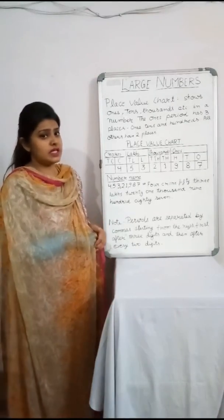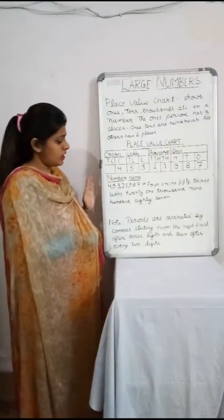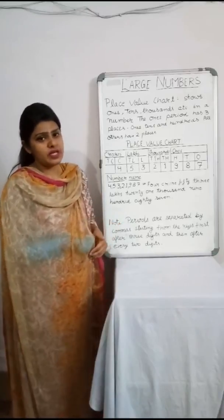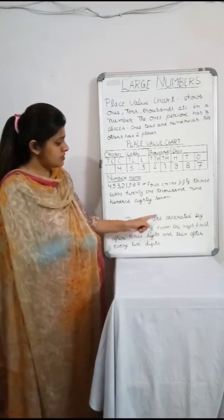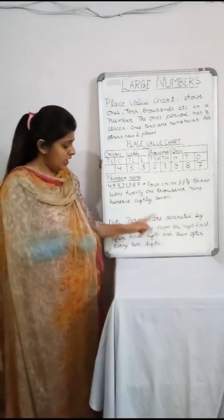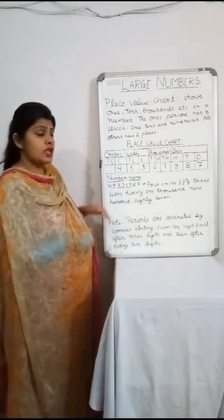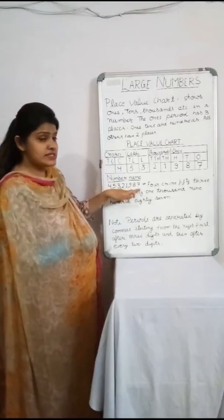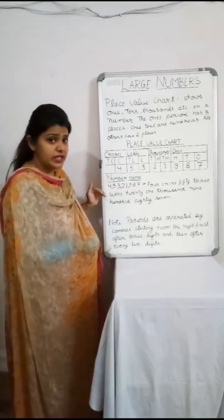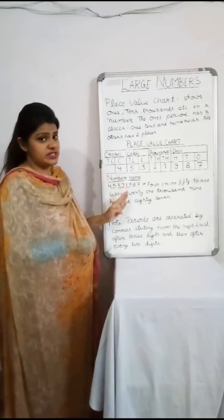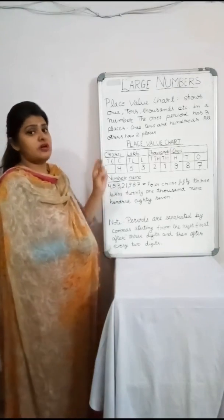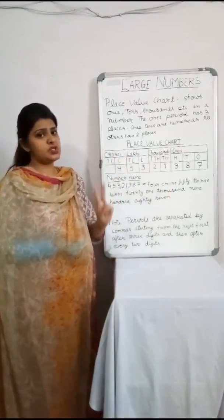I hope you are able to understand the place value chart as well as the number name. Now, one thing to note is that whenever we write a number, we put commas in it. Periods are separated by commas starting from the right — first every three digits, and then after every two digits. One period gets separated after three digits and then the other periods after every two digits.